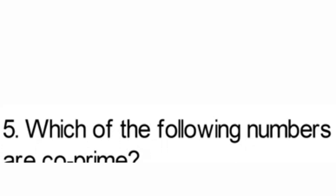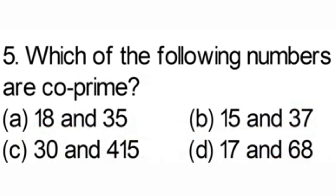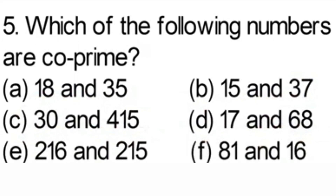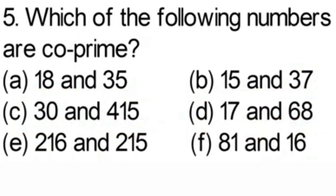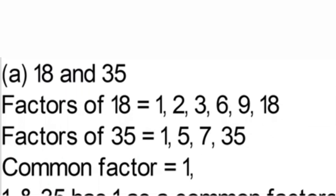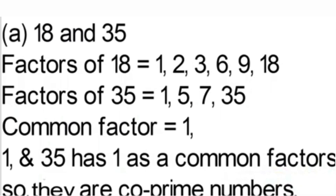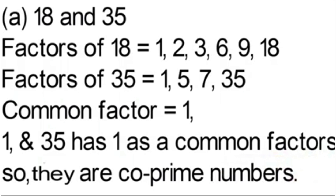Question number 5: which of the following numbers are co-prime? Part A: 18 and 35. Factors of 18: 1, 2, 3, 6, 9, 18. Factors of 35: 1, 5, 7, 35. Only 1 is a common factor, so 18 and 35 are co-prime numbers.